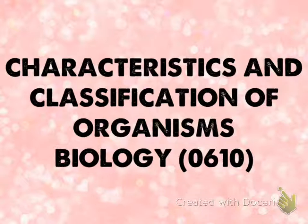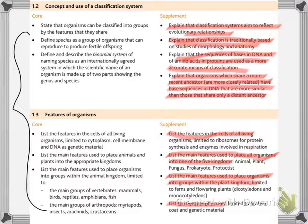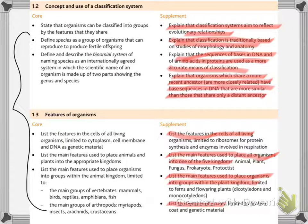This is the syllabus for characteristics of living organisms. You'll have to define and describe the characteristics of living organisms, explain the classification systems, and link classification with morphology and anatomy. You'll also have to know the sequences of bases in DNA that are used as means of classification, and explain that organisms share a more recent ancestor when they have similar base sequences in DNA.